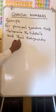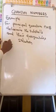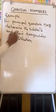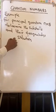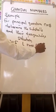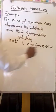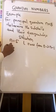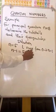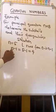For the solution: we know that L runs from 0 to n minus 1. Since n is equal to 5, n minus 1 equals 5 minus 1, which equals 4. So L has values running from 0 to 4.